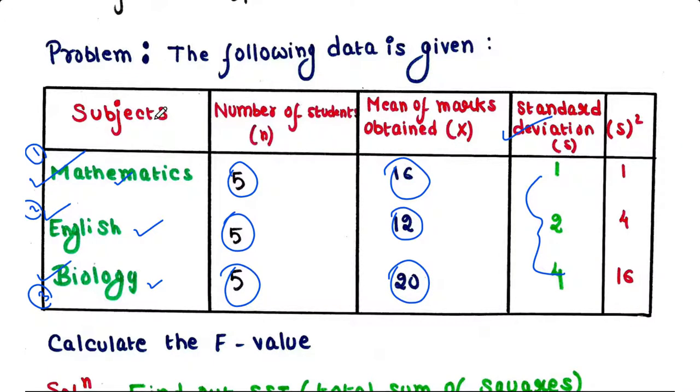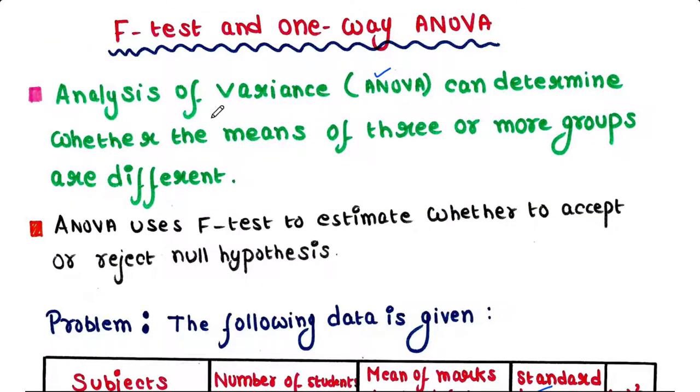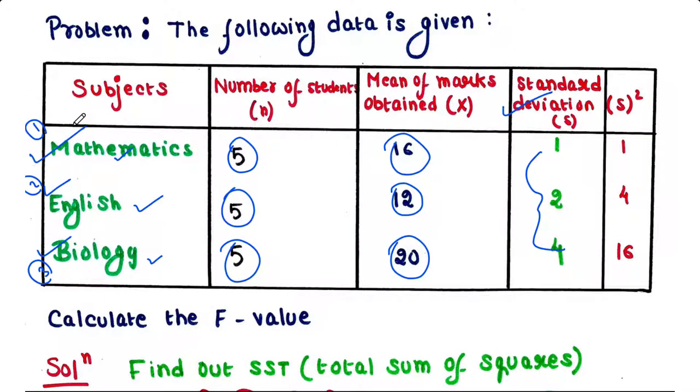In order to do so, you have to perform a statistical test that is nothing but ANOVA. Now let's define ANOVA. The full form of ANOVA is Analysis of Variance. ANOVA can determine whether the means of three or more groups are different. ANOVA uses F-test to statistically test the equality of means. In other words, we can say ANOVA uses F-test to estimate whether to accept or reject null hypothesis.